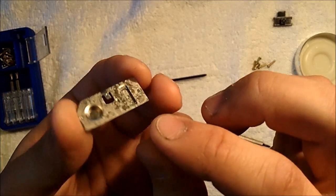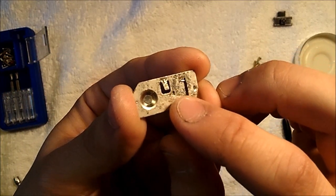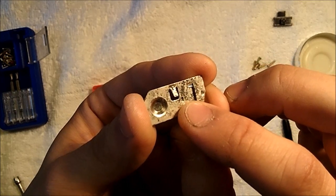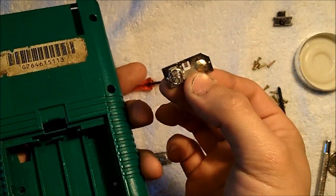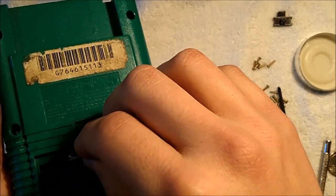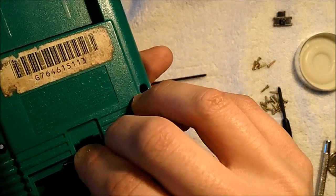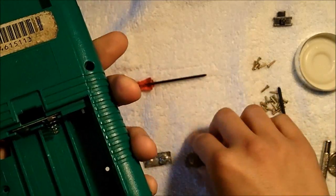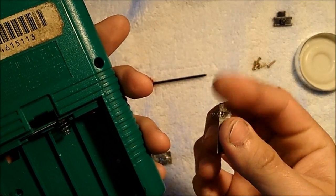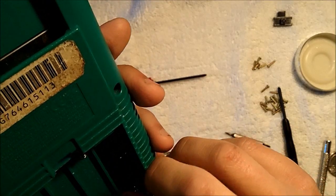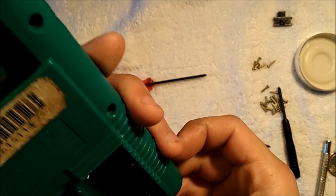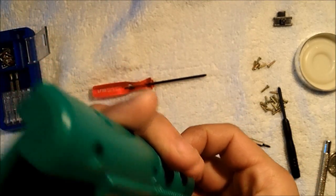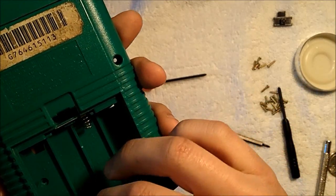Before popping them in, you want to take this little tab on the back and bend it up so that it'll stay inside the Game Boy when you install it again. With the notch facing forward, we're going to push them in. Should have a nice and reassuring click when they pop in.